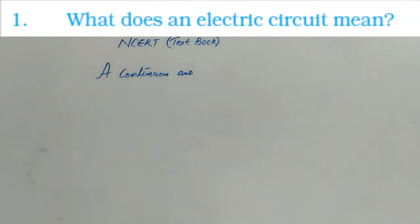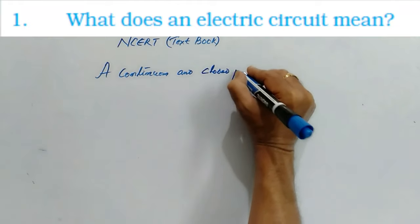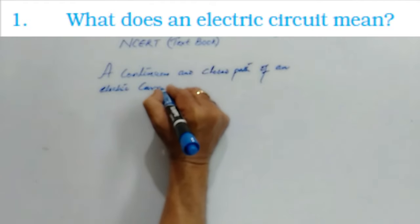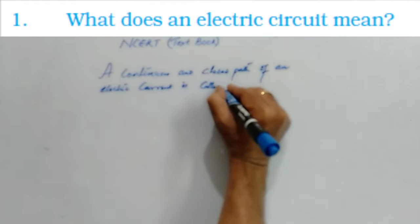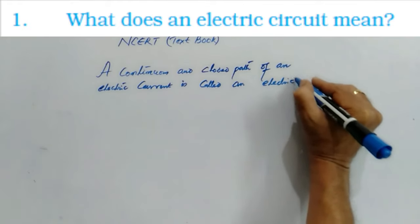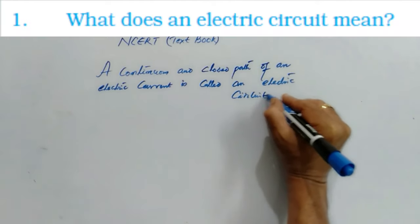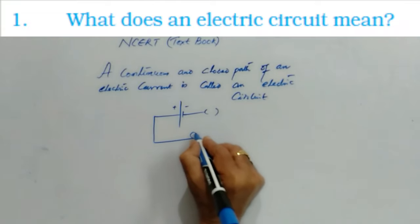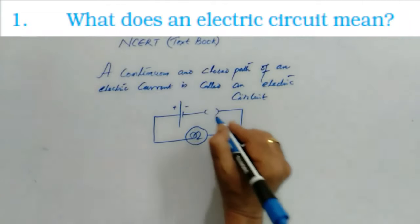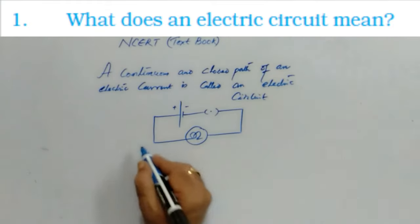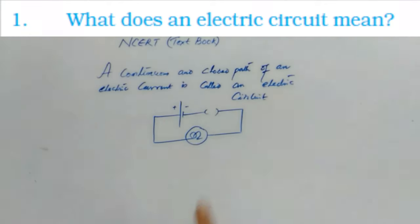A continuous and closed path of an electric current is called an electric circuit. For example, a cell, a bulb, and connecting wires. If this plug is put in, then we call it a closed circuit. Suppose if this is taken off, then no current passes through the circuit and it is called an open circuit.